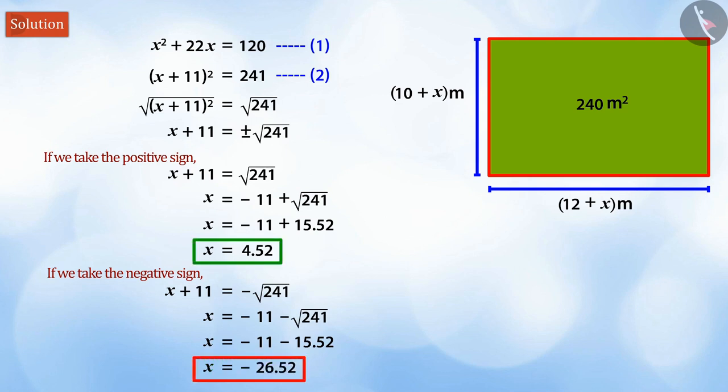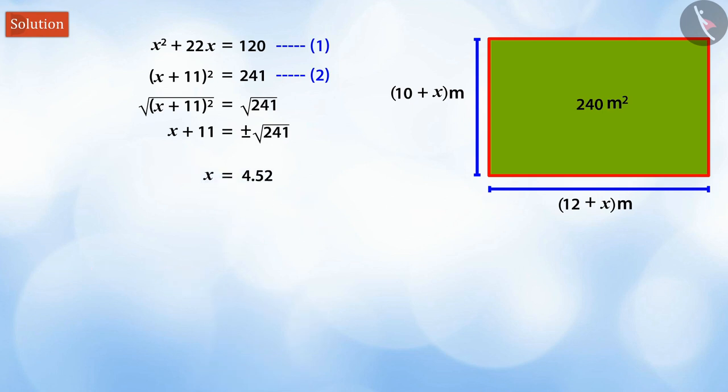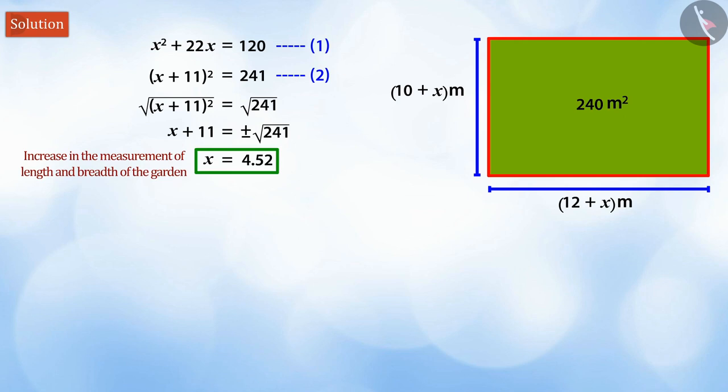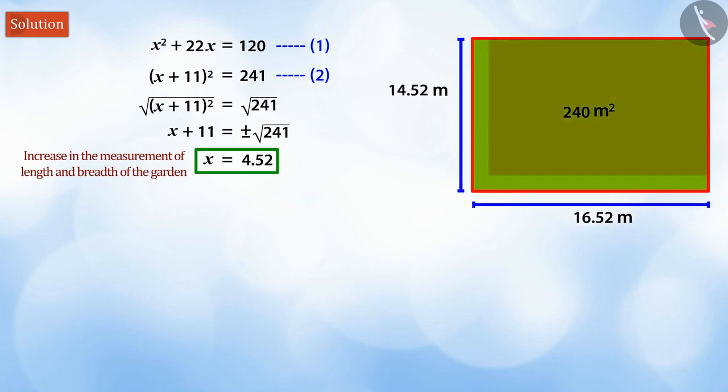Here, we get two values of x. However, dimension of the garden cannot be a negative value. Therefore, the increase in the measurement of length and width of the garden will be 4.52 meters.